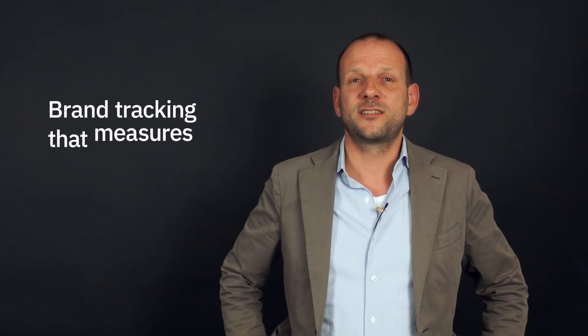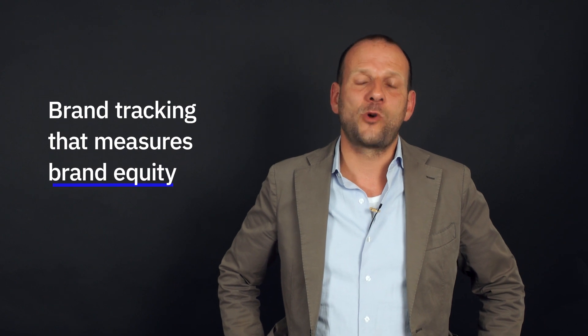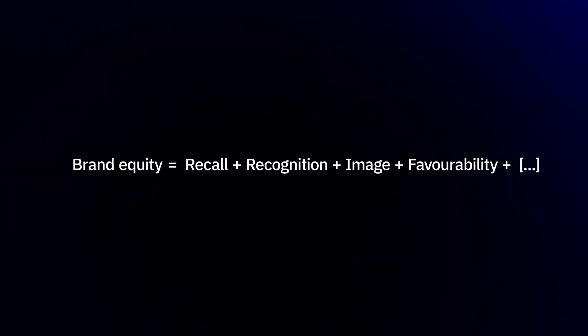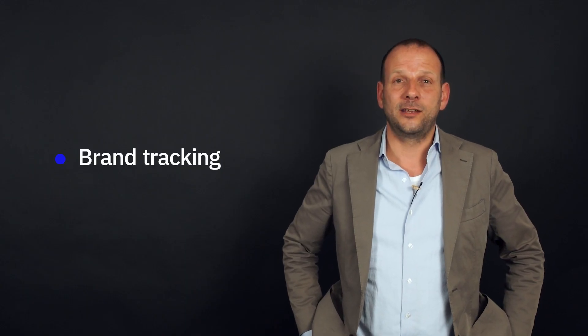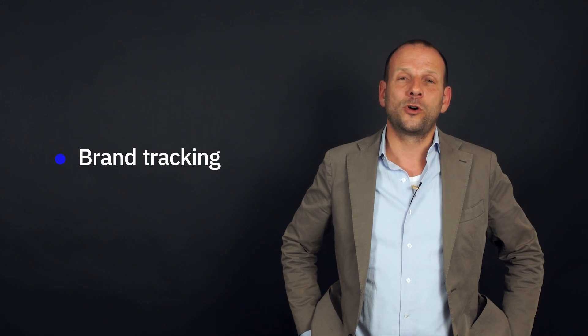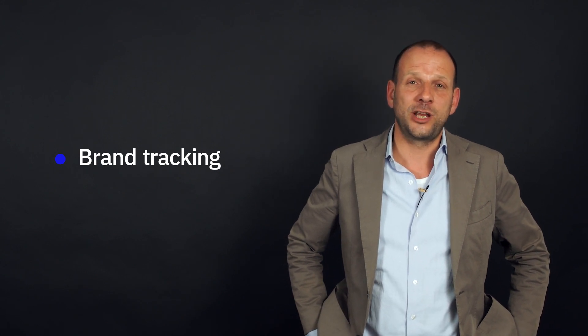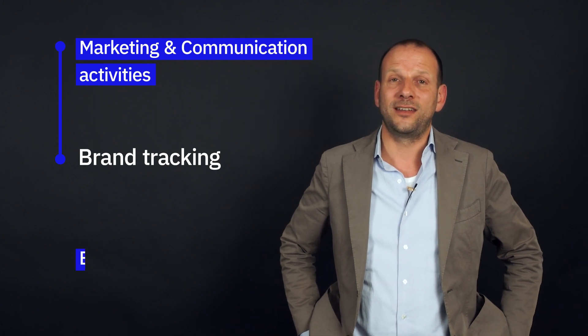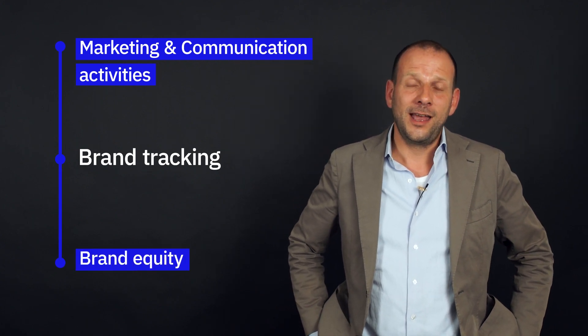The second step is a continuous brand tracking that measures brand equity through key brand metrics such as recall, recognition, image, as well as favorability over time. Having reliable brand tracking in place is crucial in order to understand the relationship between marketing and communication measures on one hand and brand equity on the other. And in order to understand all these relationships, we have to run deeper analyses with a bunch of factors.